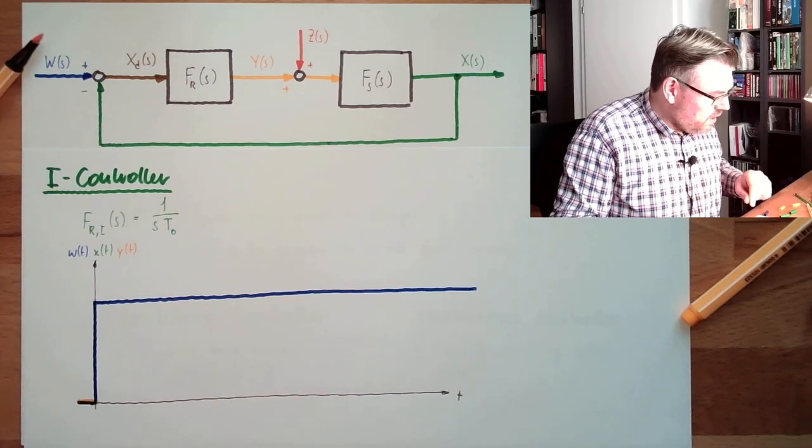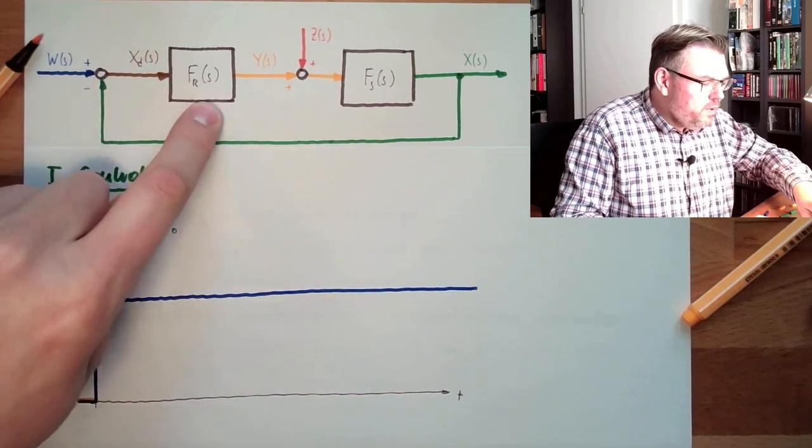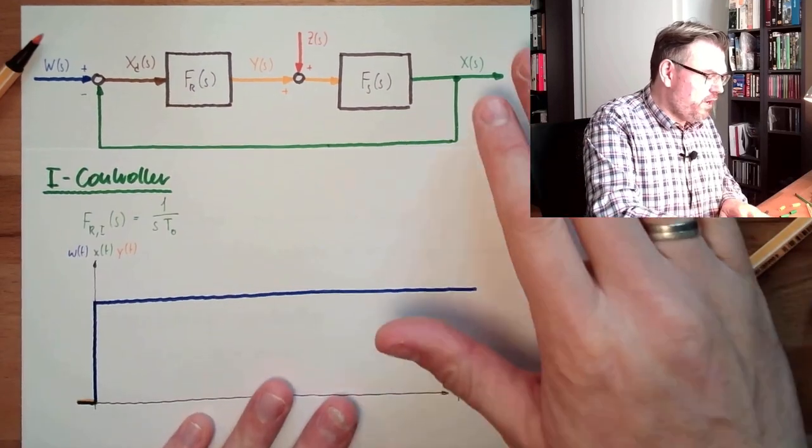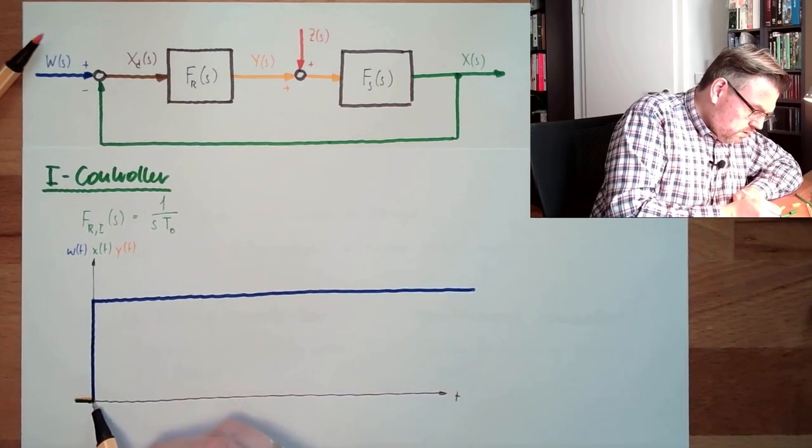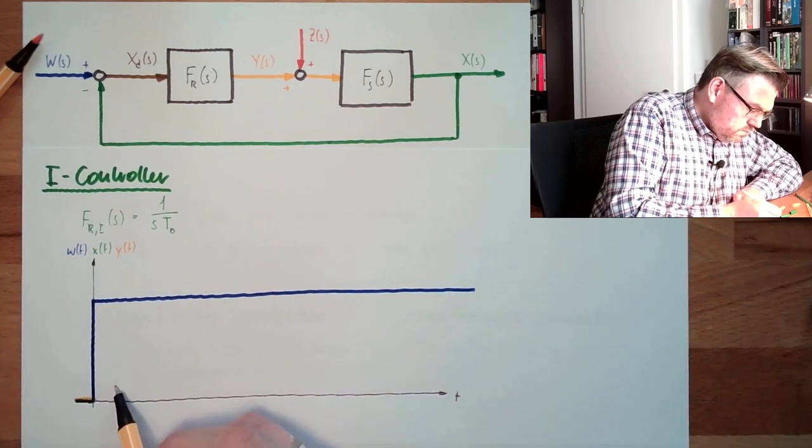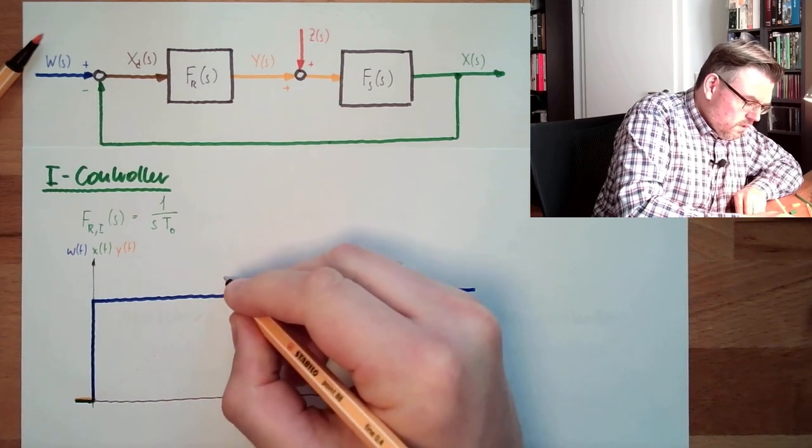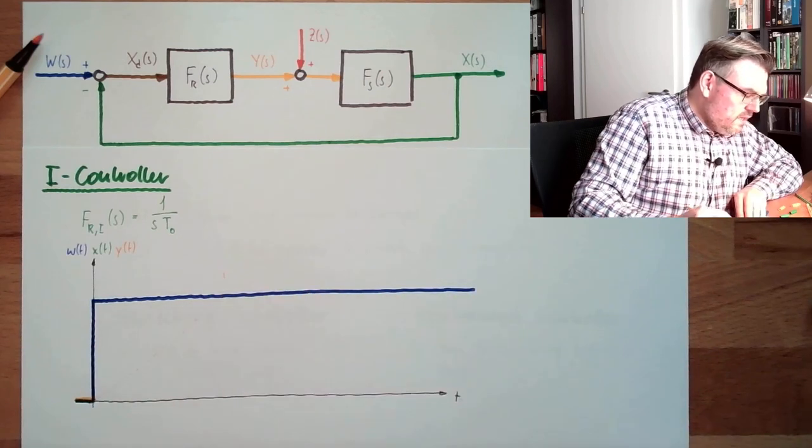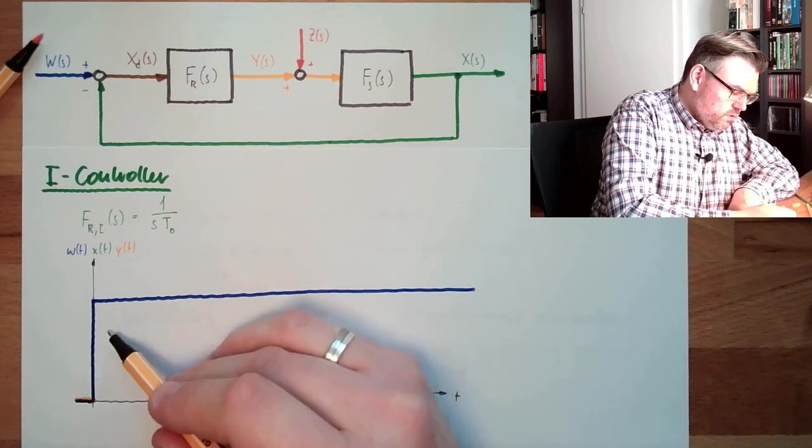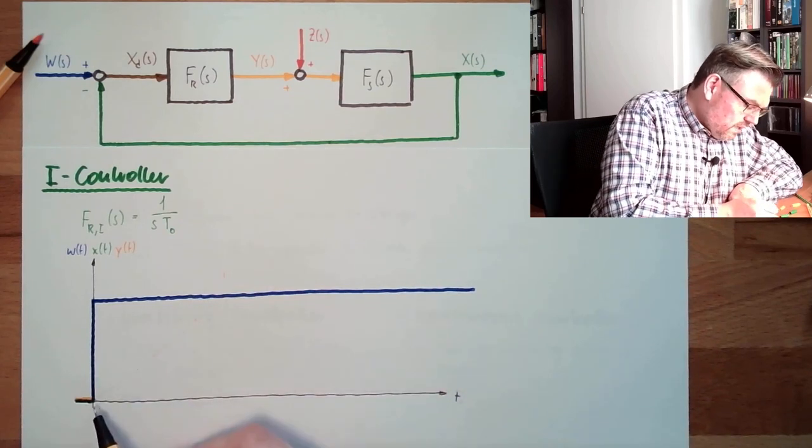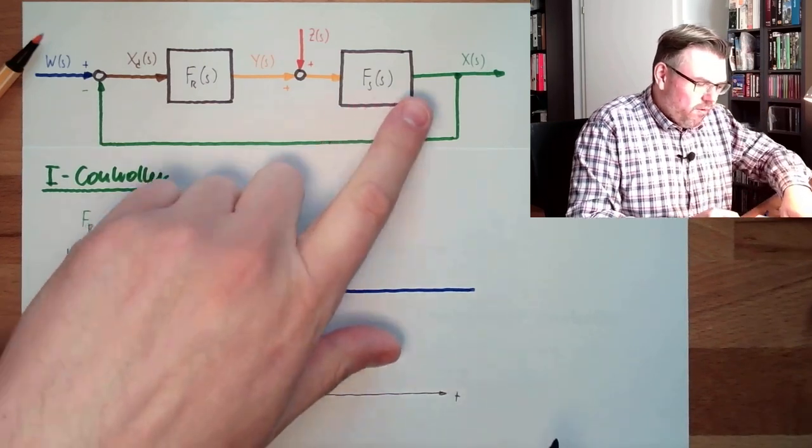Now let's have a look. Now, suddenly the control deviation is high. What would be the reaction of an integration element on an input? We will start to grow. Let's draw it here. So here we would see that the integrating time, T-N. So if this would remain constant, we will start to grow here.